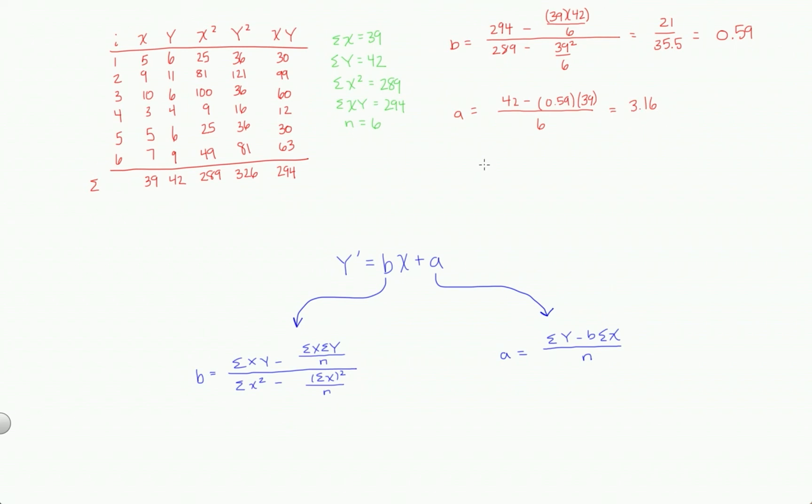So our final answer for the simple linear regression is going to be y prime equals 0.59 times x plus 3.16. This is the line of best fit. This is your final answer.